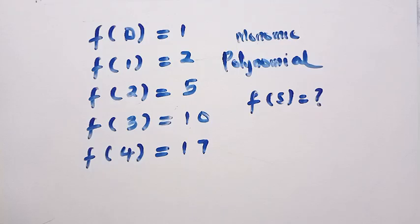How to solve this nice monomial polynomial for f of 5, given that f of 0 is 1, f of 1 is 2, f of 2 is 5, f of 3 is 10, and f of 4 is 17.